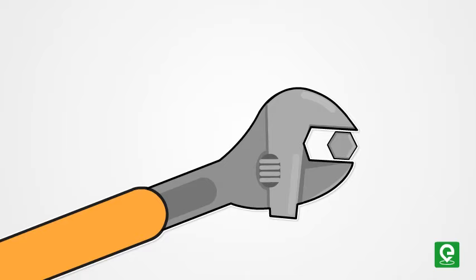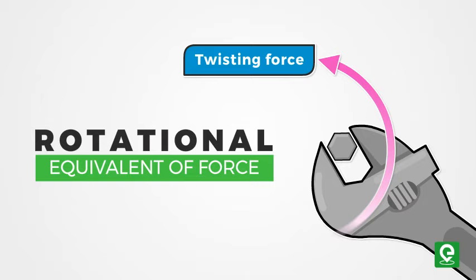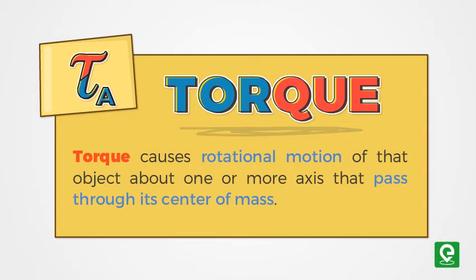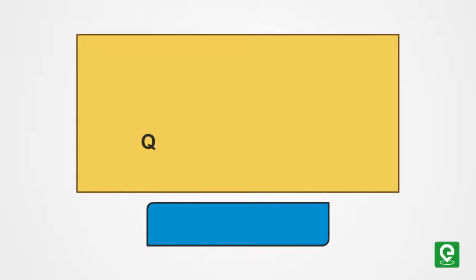As push or pull denotes force, twisting creates torque, which is the rotational equivalent of force. Torque causes rotational motion of that object about one or more axes that pass through its center of mass. It is denoted by the Greek symbol tau.